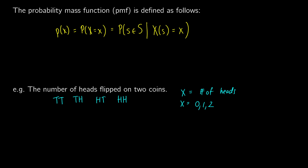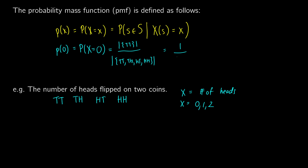Each of these will have a probability associated with it. The PMF — the probability of 0 happening — is going to be the probability where our discrete random variable is equal to 0. This is the probability of all events where we have 0 heads relative to the entire sample space. We have tails-tails divided by the total sample space: tails-tails, tails-heads, heads-tails, and heads-heads. There's one way to have zero heads and four total outcomes, so the probability of zero is 0.25.